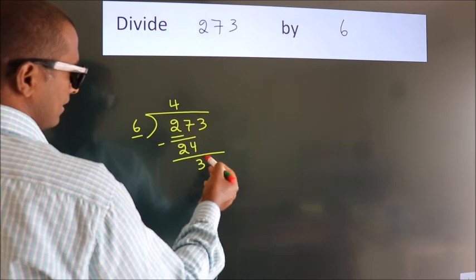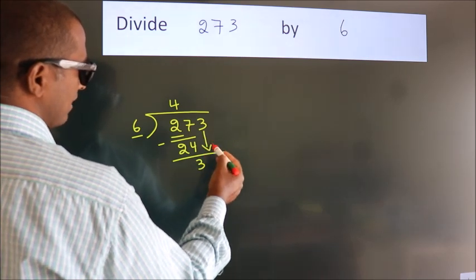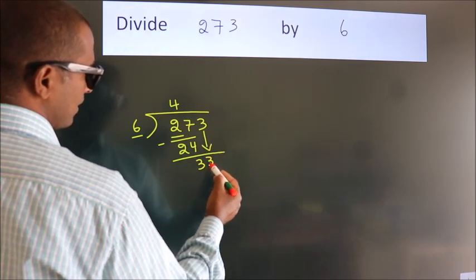After this, bring down the beside number. So, 3 down. So, 33.